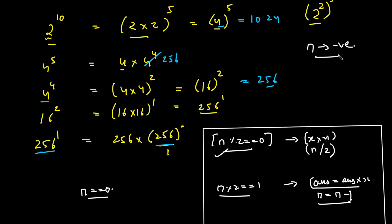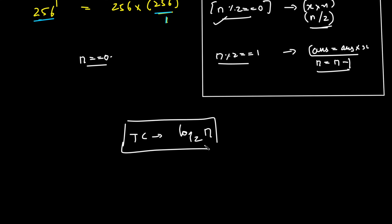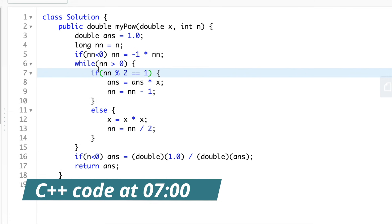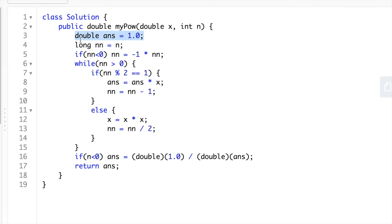If n is negative, refer back to the brute force approach for how to handle it. The time complexity is O(log n) because n is divided by 2 whenever it is even, and whenever it is odd it is reduced by 1, which makes it even at the next step — this is binary exponentiation.